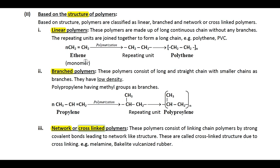Let's understand the reaction. Ethene acts as the monomer and many molecules of ethene are polymerized. On polymerization, the double bond breaks to form a single bond and we get a repeating unit CH₂–CH₂, which is repeated n times to form polyethene.